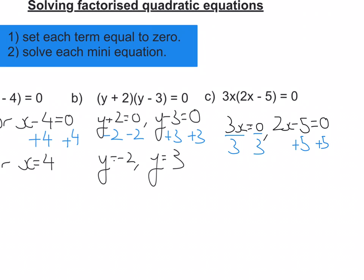So our next stage would be, well, 3x divided by 3 is x, 0 divided by 3 is 0. And on the other one, we've got 2x is equal to 5. Now to get x on its own, I'll divide by 2. So I'm going to get x is equal to 5 over 2. So my answers for this one are x equals 0 and x equals 5 over 2.